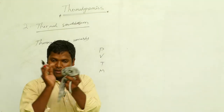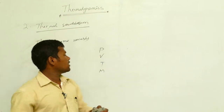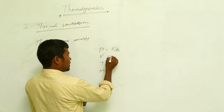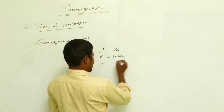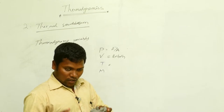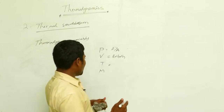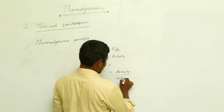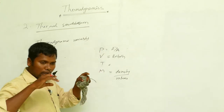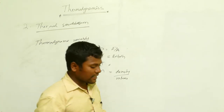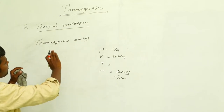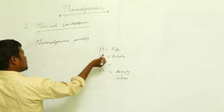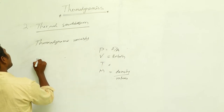Pressure formula is force divided by area. Volume formula is length times breadth times height. Temperature is the degree of hotness or coldness. Mass formula involves density by volume. These are the parameters. When I apply 10 pascals here, pascal is the unit of pressure measurement.